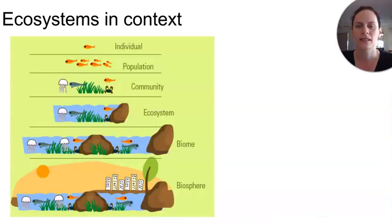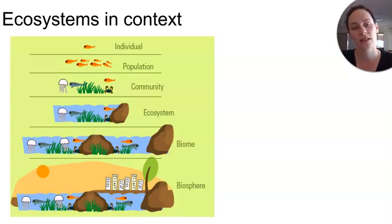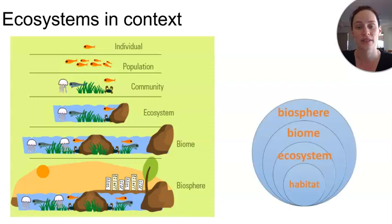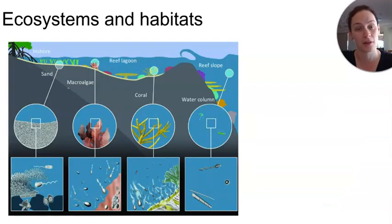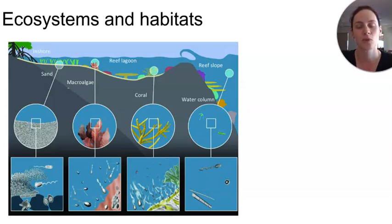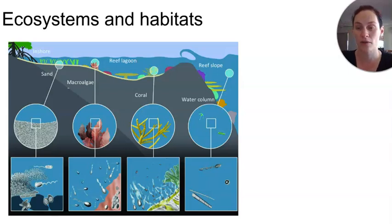Ecosystems fit within a much larger biome — a more generalized way to look at ecosystems where organisms and conditions are similar across a geographical region, and there are lots of different divisions of this. Ecosystems themselves are made up of a variety of habitats, ranging from very large to very small. Habitats are smaller regions within that larger ecosystem, and they may experience slightly different conditions to the ecosystem overall.